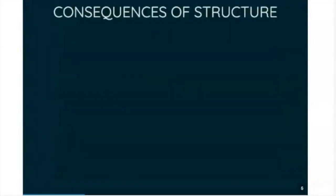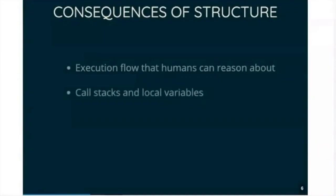So getting rid of goto didn't just give us nice execution flow that humans can reason about. It did a whole lot more than that. It let us have call stacks and local variables in our functions. And the reason for that is that goto doesn't just jump around inside a function. It can jump to anywhere in the code. So you can jump from the middle of one function to the middle of a completely different function. And if you can do that, then you can't rely on local variables because they may not have been set. You've got all the ones from the previous function instead of the new function.